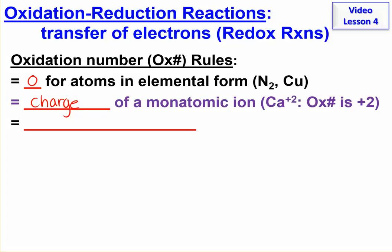Then a few elements that we need to just memorize. The oxidation number is minus two for oxygen. The oxidation number is plus one for hydrogen.